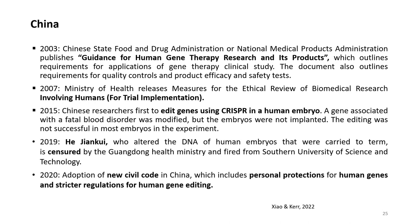In 2007, the Ministry of Health released measures for the ethical review of biomedical research involving humans for trial implementation. In 2015, Chinese researchers were the first to edit genes using CRISPR in a human embryo — a gene associated with a fatal blood disorder was modified, but the embryos were not implanted, and the editing was not successful in most embryos. We have discussed the case of He Jiankui, who altered the genome of human embryos that were carried to term. He was censured by the Guangdong Health Ministry, fired from the Southern University of Science and Technology, and was later jailed, and his collaborators were also punished.